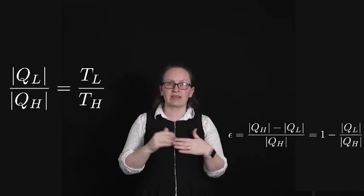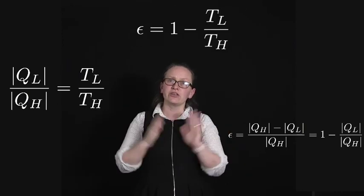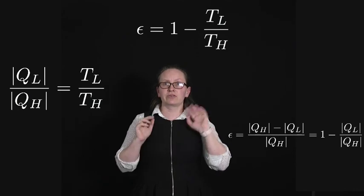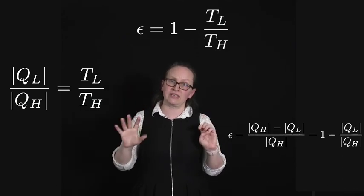So what we can do now with our efficiency equation is just substitute that in. So we end up with the efficiency for a Carnot cycle is equal to 1 minus TL on TH.